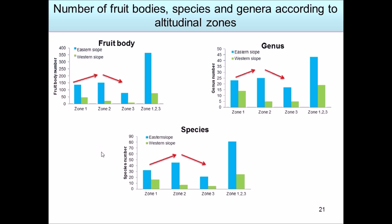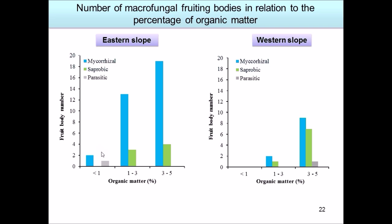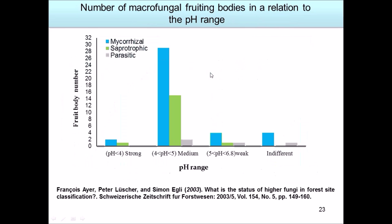I also examined whether the percentage of organic matter contributes to where we find a high number of mycorrhizal fungi. On the eastern slope, there is an increase in mycorrhizal fungi numbers corresponding to the increase in organic matter percentage. Between three and four percent organic matter, we see a high level of mycorrhizal fungi. The same trend was observed on the western slope, but the number of mycorrhizal fruiting bodies was lower in comparison.